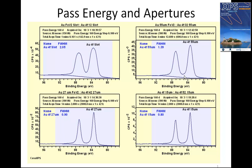Photoemission peaks have an underlying line shape. However, measured spectra have line shapes that depend on the underlying line shape of the photoemission peak, but also on the acquisition conditions. In this example, we have four spectra that were all measured from the same sample using the same pass energy. The difference between these data are the size of a selected area aperture.